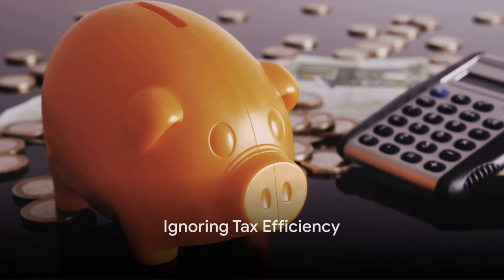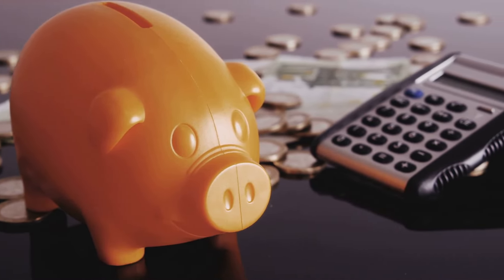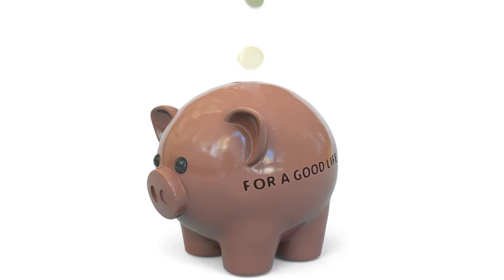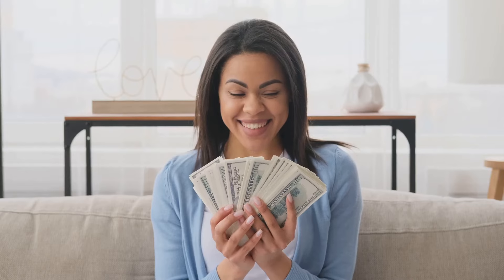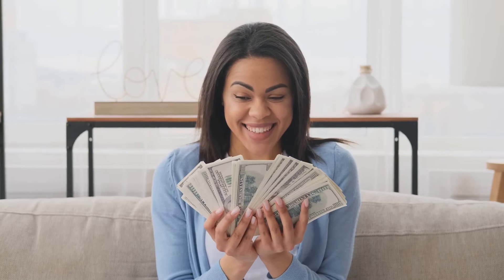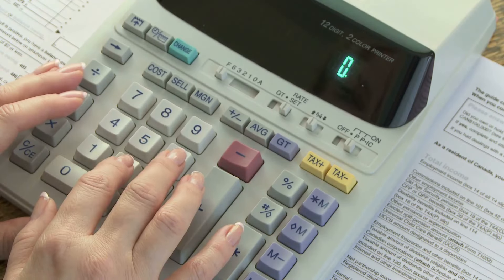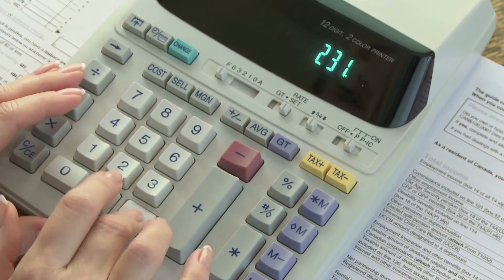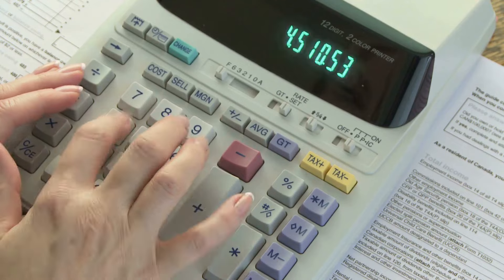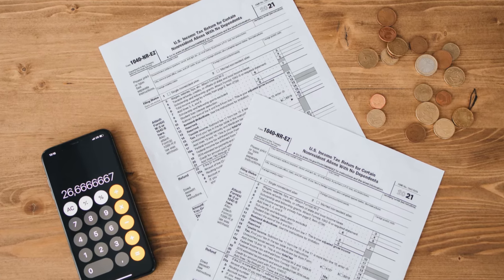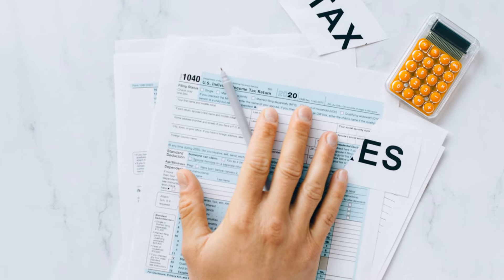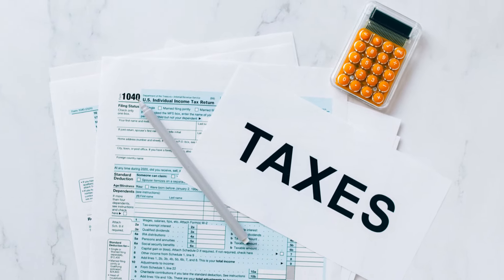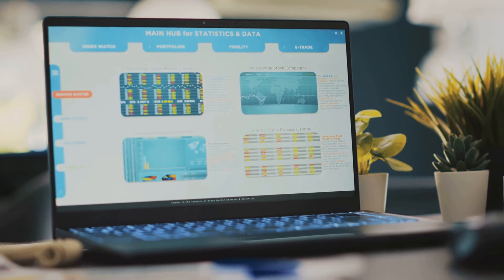Mistake number six, ignoring tax efficiency. Tax efficiency is the art of managing your finances in a way that reduces your tax liability. Or in simpler terms, it's about keeping more of your hard earned cash in your pocket, rather than sending it to the taxman. Many people overlook this crucial aspect of their finances, often leaving them paying more tax than they need to. This commonly happens when we fail to take advantage of tax-advantaged savings accounts, such as individual retirement accounts or 401Ks in the United States.